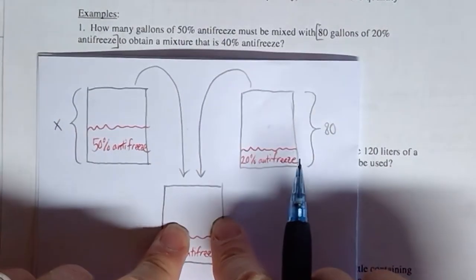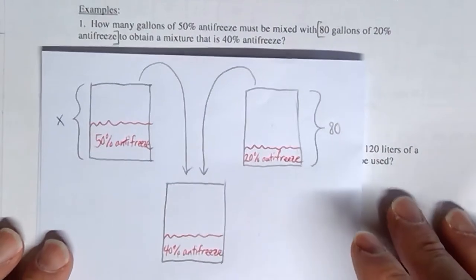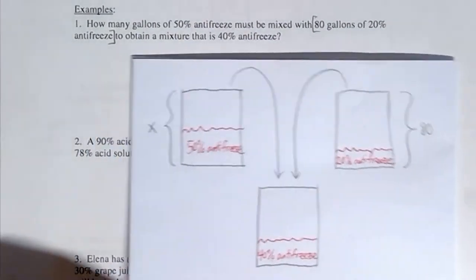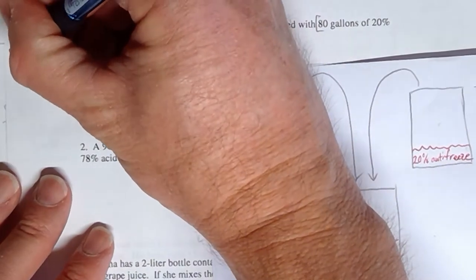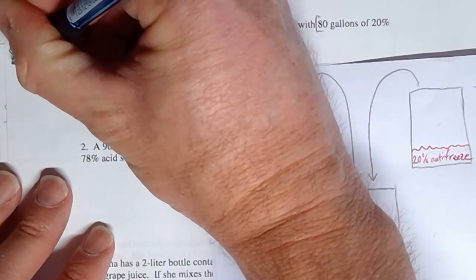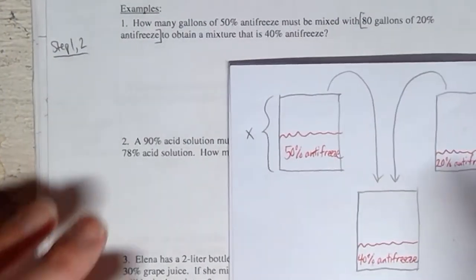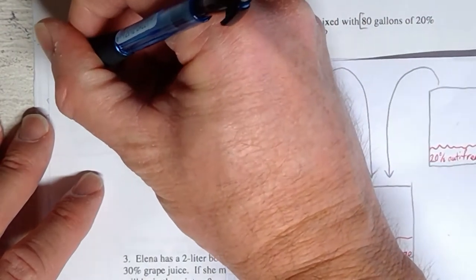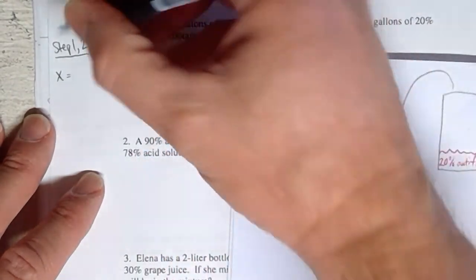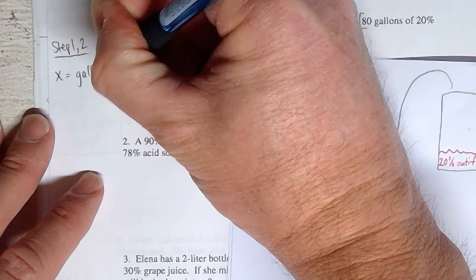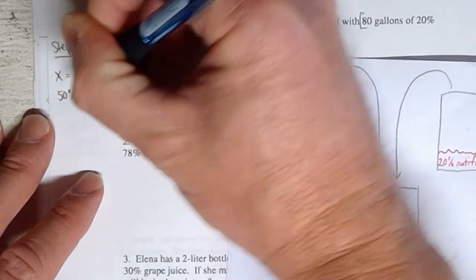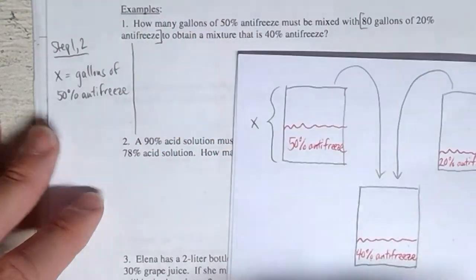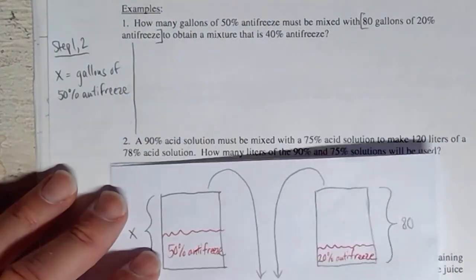The question asks how many gallons of 50% antifreeze, so we use a variable to indicate that. We'll call it X. X is going to be the gallons of 50% antifreeze — that's the only question, so you only need one variable.